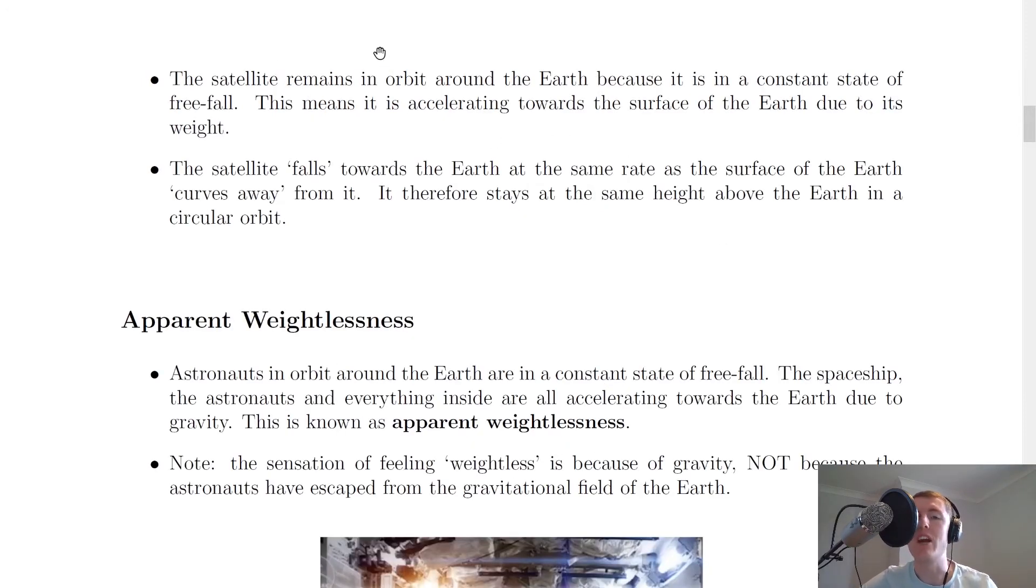The satellite remains in orbit around the Earth because it is in a constant state of freefall. This means it is accelerating towards the surface of the Earth due to its weight. The satellite falls towards the Earth at the same rate as the surface of the Earth curves away from it. It therefore stays at the same height above the Earth in a circular orbit.